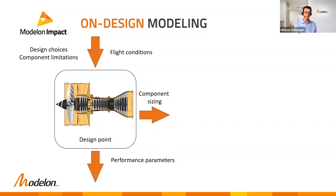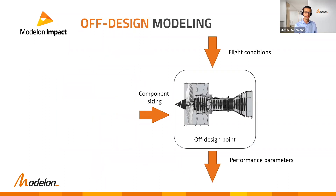This goes hand in hand with off-design modeling. Once you have a single operating condition defining the sizing, you want to evaluate performance on other operating conditions. You prescribe flight level, ambient conditions, etc., and predict how the system operates. This is closer to the classic notion of modeling in Modelica, but both on-design and off-design are heavily used in industry.